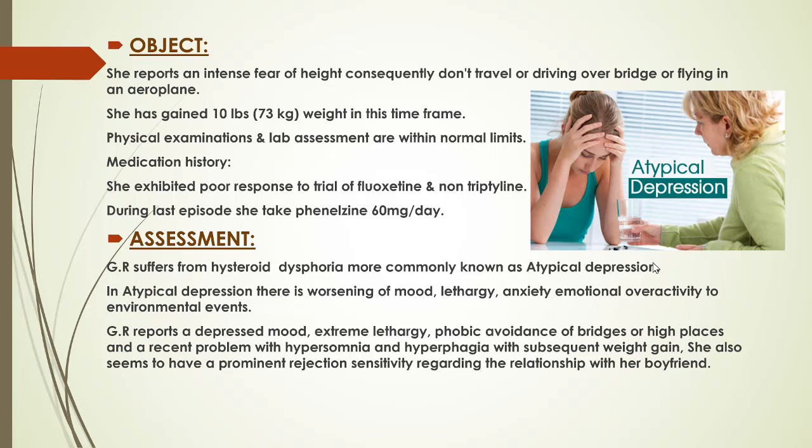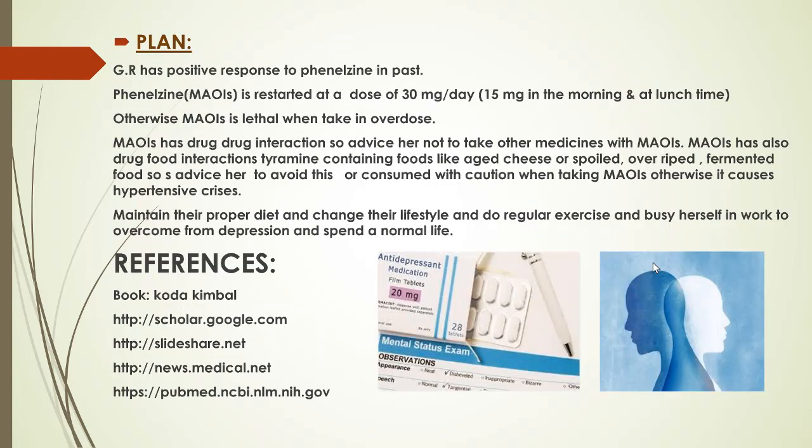Assessment: GR is suffering from hysteroid dysphoria, more commonly known as atypical depression. It is a dysthymic disorder characterized by worsening of mood, lethargy, anxiety, and emotional over-reactivity to environmental events. GR reports depressed mood, extreme lethargy, phobic avoidance of bridges and high places, and recent problems with hypersomnia and hyperphagia with subsequent weight gain. She also seems to have prominent rejection sensitivity regarding the relationship with her boyfriend.